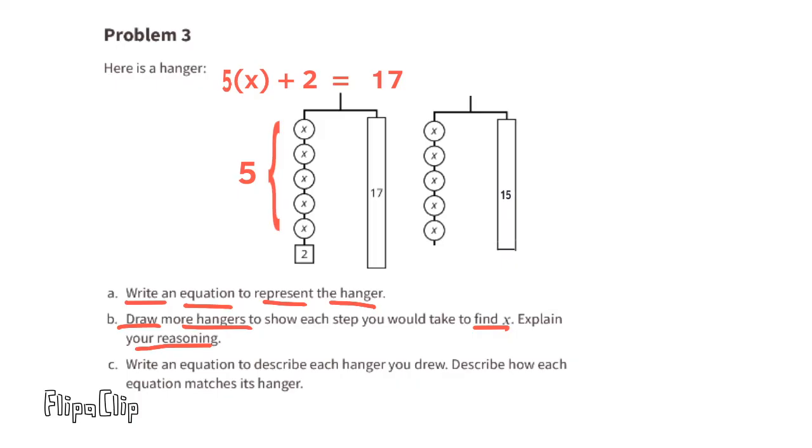Now the balanced hanger represents an equation that would be 5x = 15. There's 5x's and I can divide 15 by 5 and have 5 groups of 3, because 5 times 3 equals 15 and the hanger is still balanced. 5x divided by 5 is x and 15 divided by 5 is 3. So 1x has a value of 3. That means x = 3.